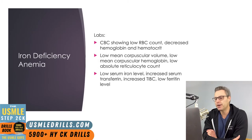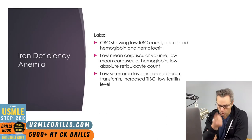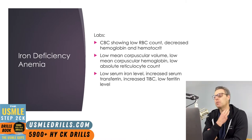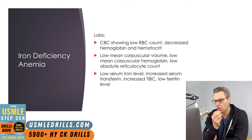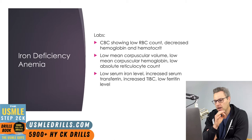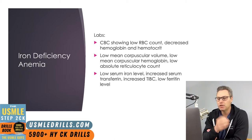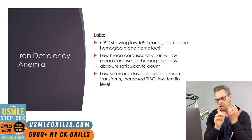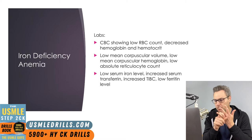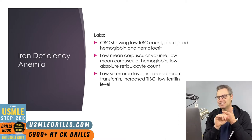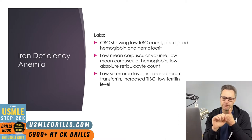Labs consistent with iron deficiency anemia include a CBC showing low RBC counts, decreased hemoglobin, and decreased hematocrit. As with all microcytic anemias, the mean corpuscular volume is low. There's also a low mean corpuscular hemoglobin and a low absolute reticulocyte count. Iron studies show low serum iron, increased serum transferrin, increased TIBC, and low ferritin.